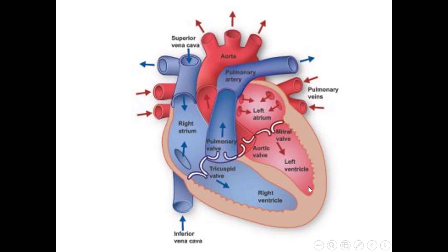There is one right ventricle on the right side and a left ventricle on the left side. You can say this is the right side of the heart, or the right-sided heart, and this is the left side of the heart. On the right side there is the right atrium and right ventricle, and on the left side there is the left atrium and left ventricle.